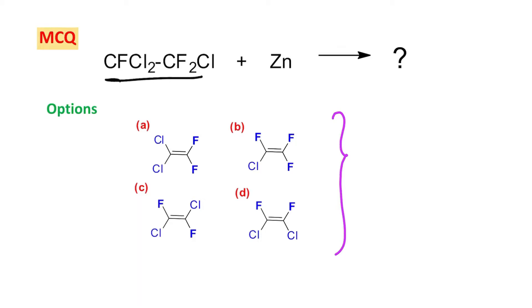The reaction of this molecule with zinc—this molecule has a name, it's called CFC or chlorofluorocarbon, this is C2 species. From this you can understand it's an elimination reaction. Let's learn how this happens.